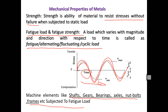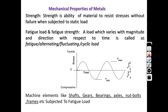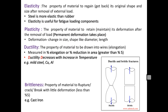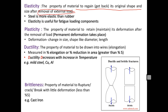The next property is elasticity. Elasticity is the property of a material to regain — to get back — its original dimensions when the load is removed. Highlight this as the definition: ability to regain original dimensions when the load is removed. Steel is more elastic than rubber, and this elasticity property is very useful in components subjected to fatigue loading.